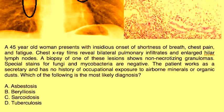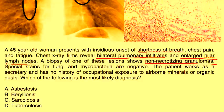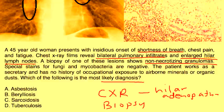Here are clinical vignettes. A 45-year-old woman presents with insidious onset of shortness of breath, chest pain, and fatigue. Chest X-ray reveals bilateral pulmonary infiltrates and enlarged hilar lymph nodes. Biopsy shows non-necrotizing granulomas; special stains for fungi and mycobacteria are negative. She works as a secretary with no occupational exposure. The patient has shown the two classic findings: hilar adenopathy on chest X-ray and non-caseating granulomas on biopsy.